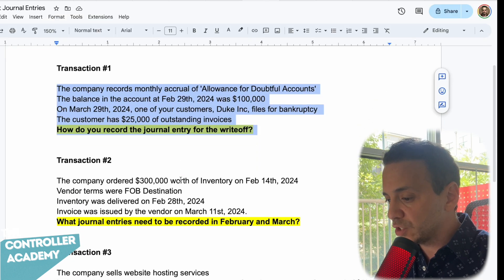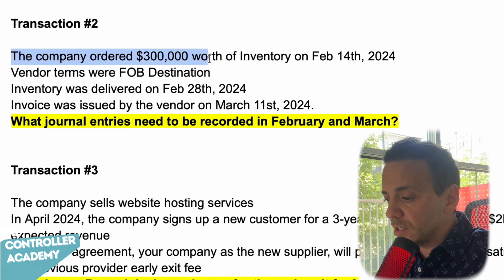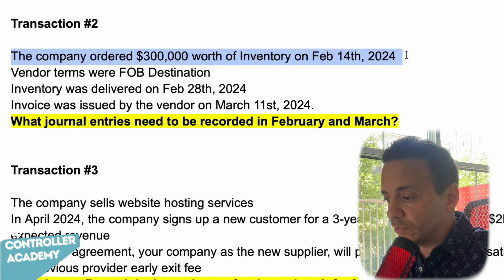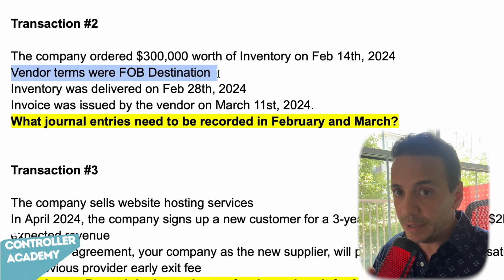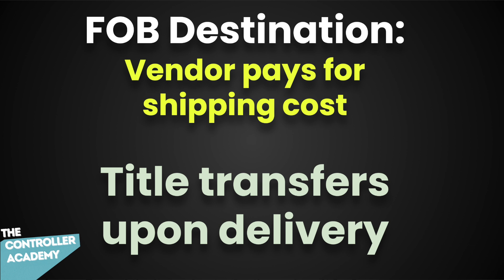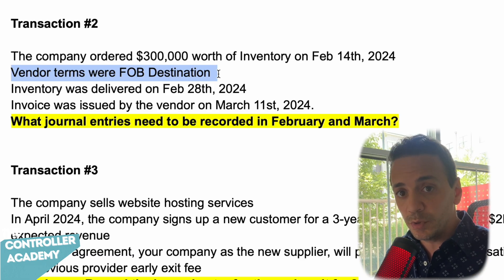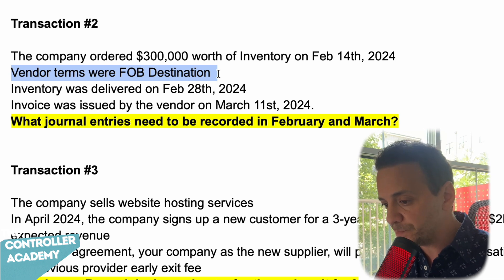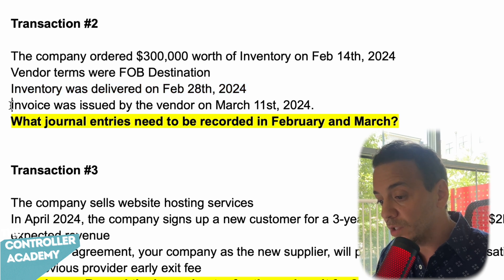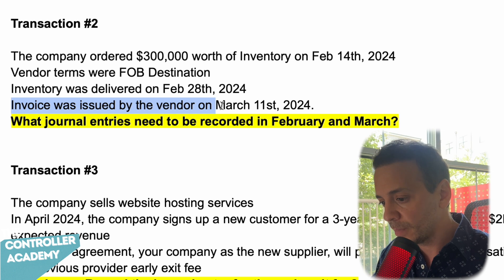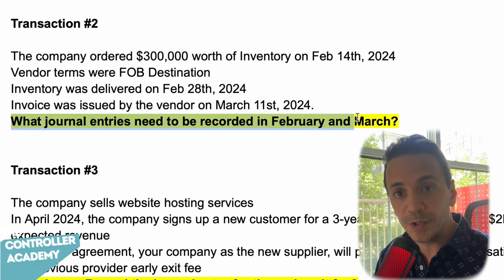Let's move on to transaction number two. The company ordered $300,000 worth of inventory on February 14th, 2024. The vendor terms are FOB destination — meaning the vendor is paying for shipping, and title and risk of ownership transfer to the company upon arrival at the destination. That's important because that's when you record the inventory on your books. Inventory was delivered on February 28th, 2024. The invoice was issued by the vendor in March. What journal entries would you need to record in February and in March?